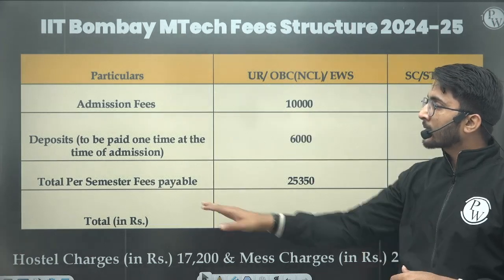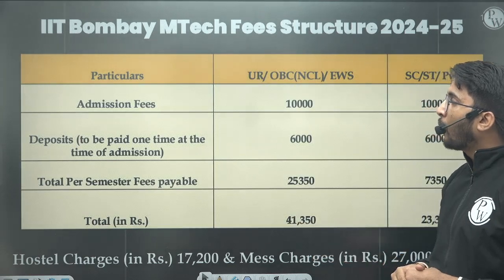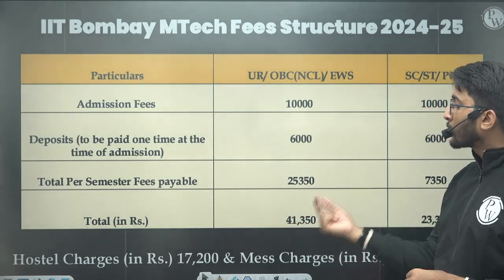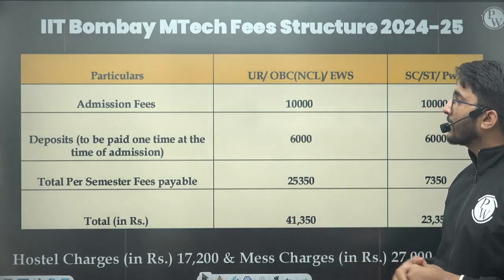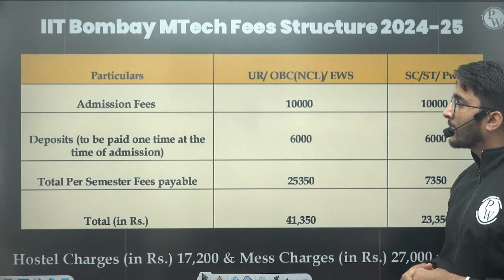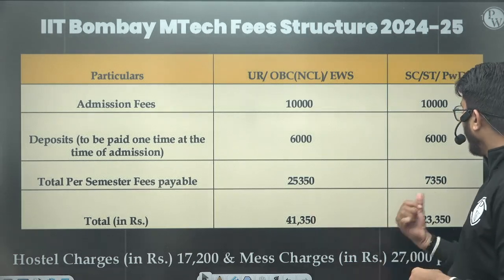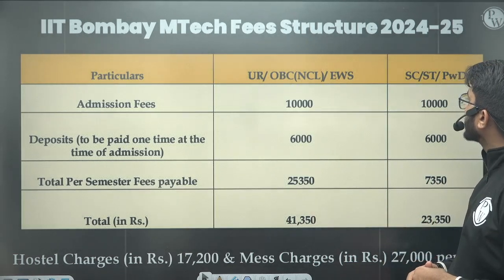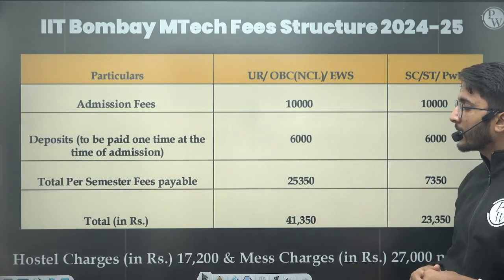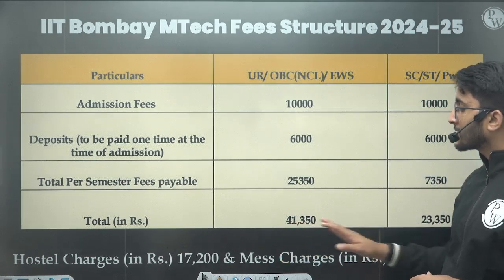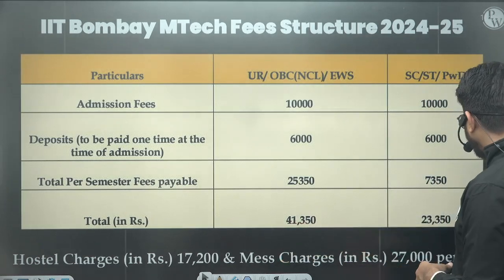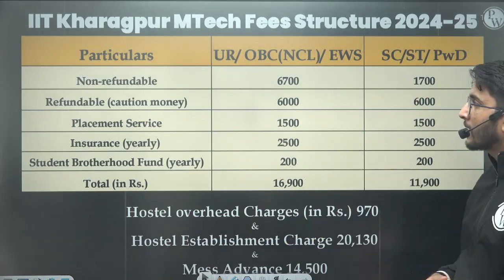So including the one-time amount, the total fees at IIT Bombay is ₹41,350 for General, OBC-NCL, and EWS, and ₹23,350 for SC, ST, and PWD category. The hostel charges and mess charges are also mentioned here.